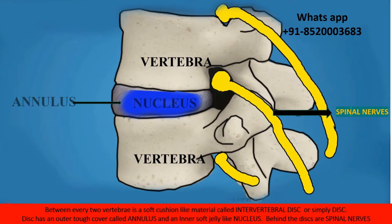The disc has two components: an outer tough covering called the annulus, and an inner soft jelly-like material called the nucleus. Behind the discs are our spinal nerves, which supply the legs.